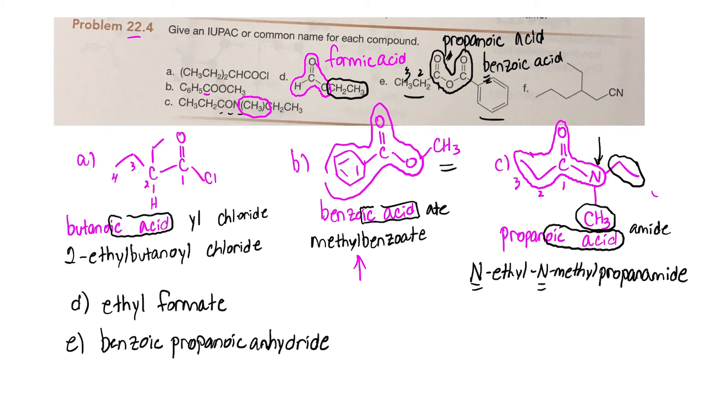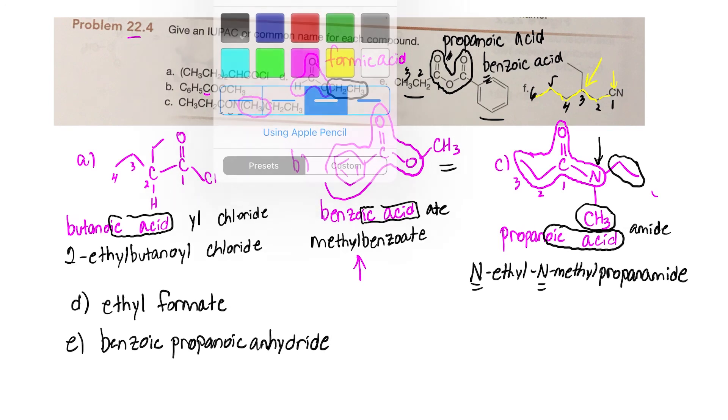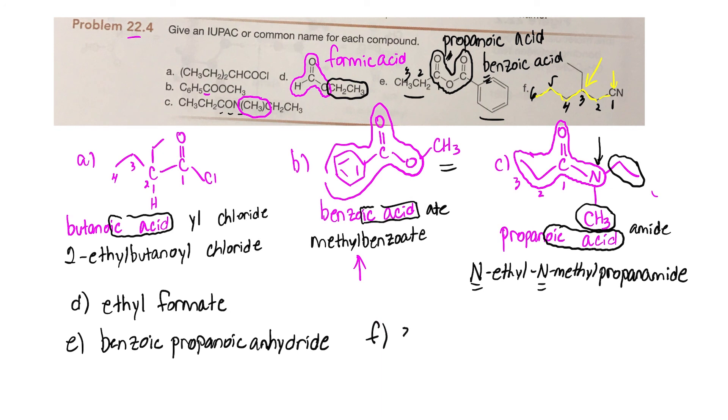In molecule F, you want to identify the longest chain, and it very nicely goes straight across the molecule. That's six carbons—don't forget to count this carbon. So that's a hexanenitrile, and we've got an ethyl group at carbon three. So let's assemble that name: 3-ethyl hexanenitrile.